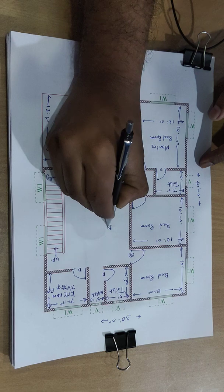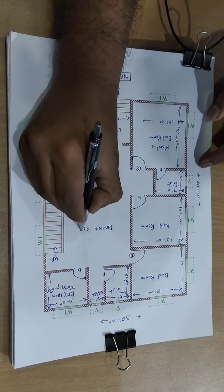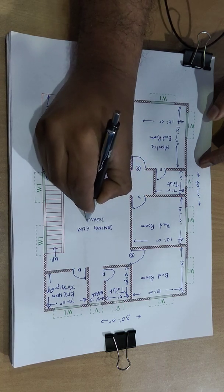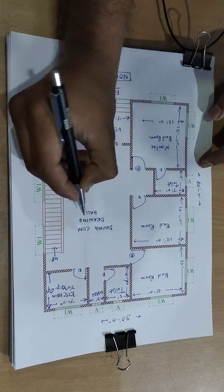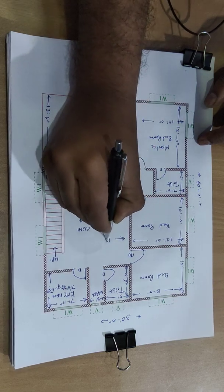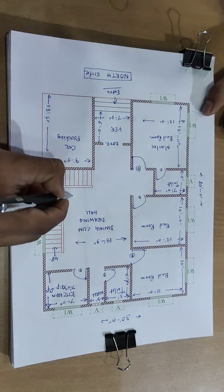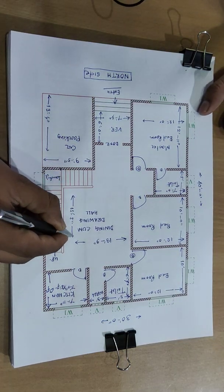And dining come drawing hall. Size 13 feet 9 inch and 15 feet 5 inch. Okay.